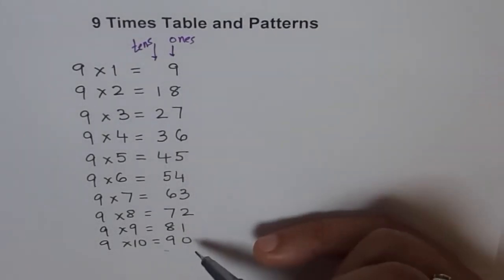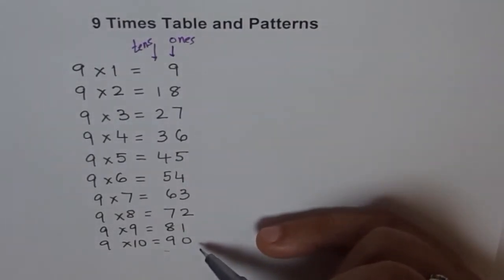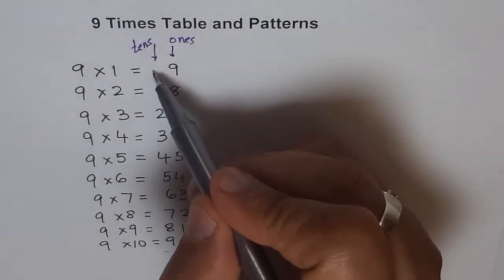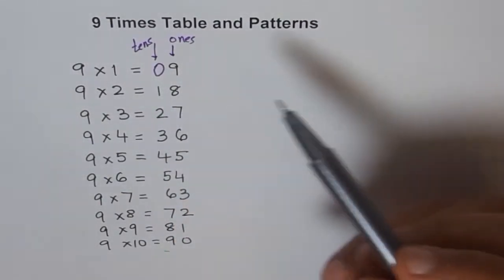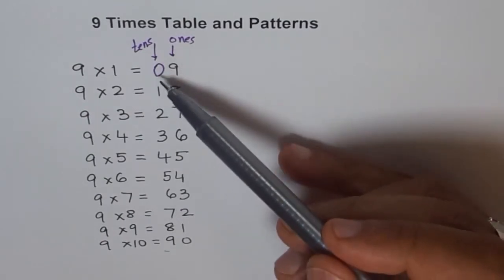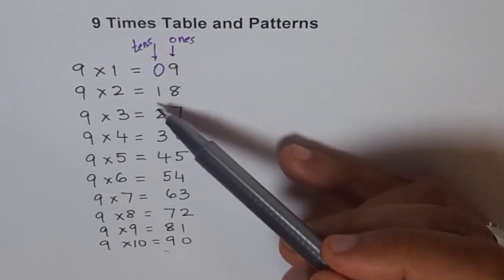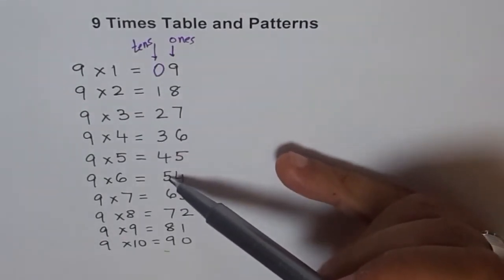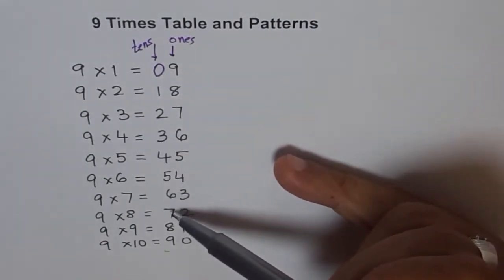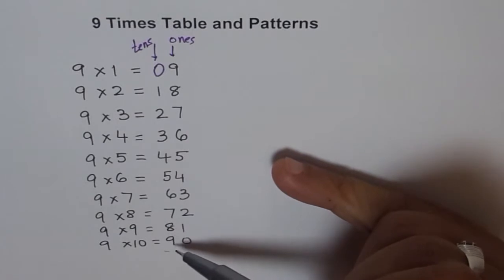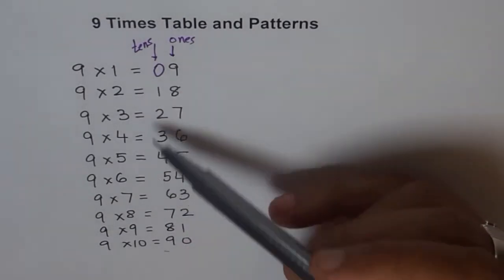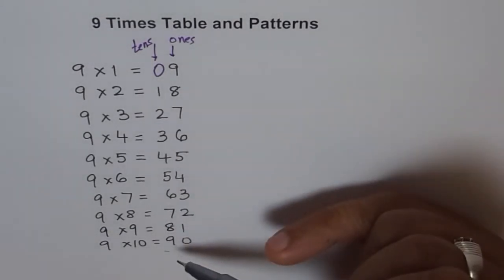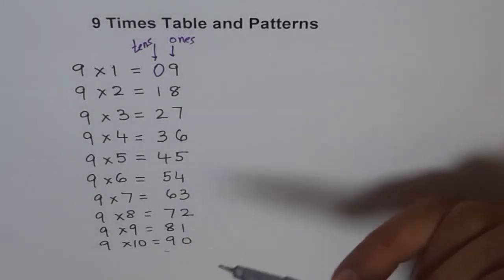How about the tens place? I should write 0 here — 9 is the same as 09. The tens digits go: 0, 1, 2, 3, 4, 5, 6, 7, 8, 9. Counting from 0 to 9. So beautiful!